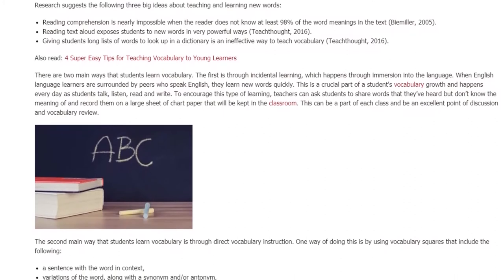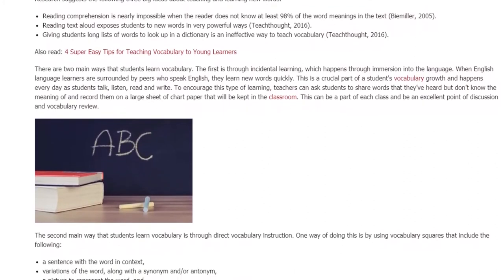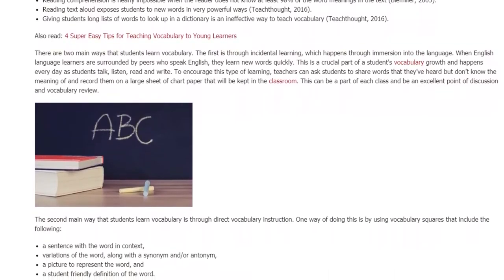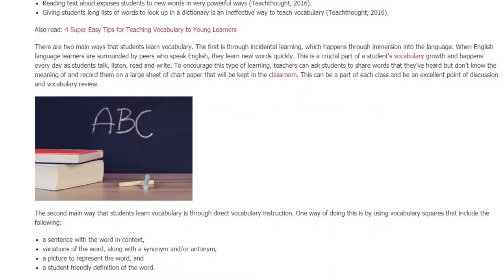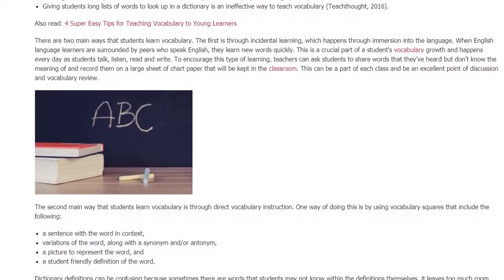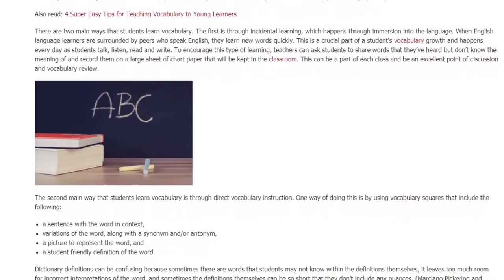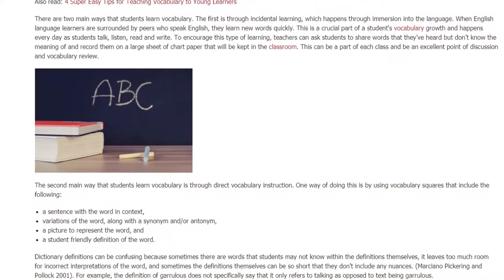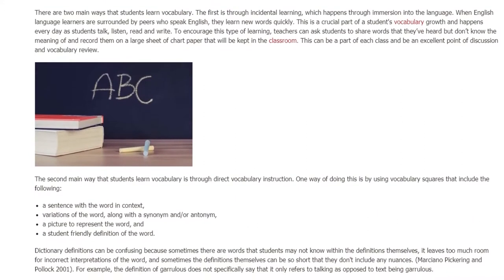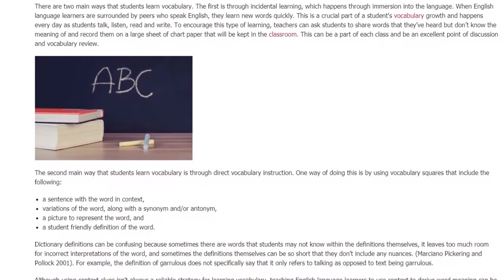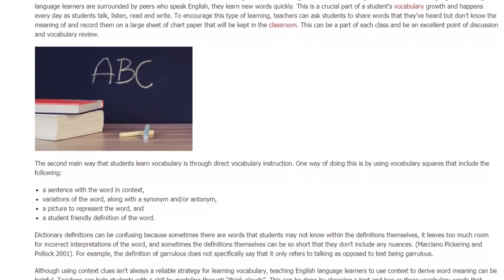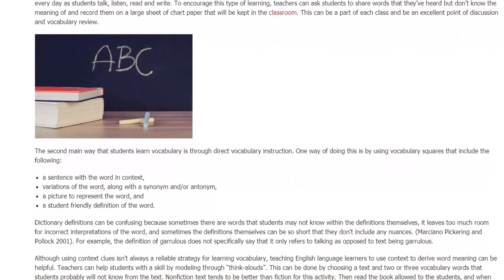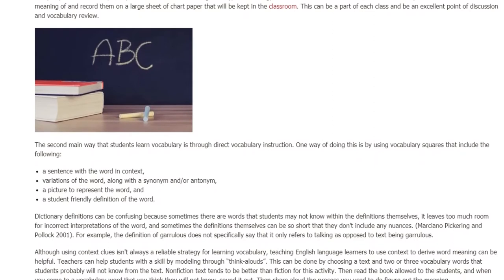A sentence with the word in context. Variations of the word, along with a synonym and or antonym. A picture to represent the word. And a student-friendly definition of the word. Dictionary definitions can be confusing because sometimes there are words that students may not know within the definitions themselves. It leaves too much room for incorrect interpretations of the word. And sometimes the definitions themselves can be so short that they don't include any nuances.